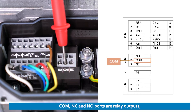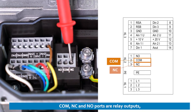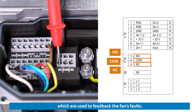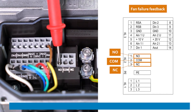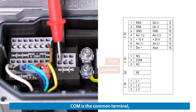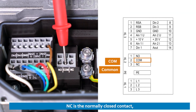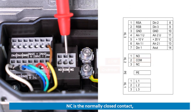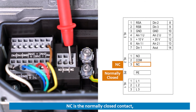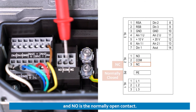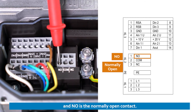COM, NC, and NO ports are relay outputs, which are used to feedback the fan's status. COM is the common terminal, NC is the normally closed contact, and NO is the normally open contact.